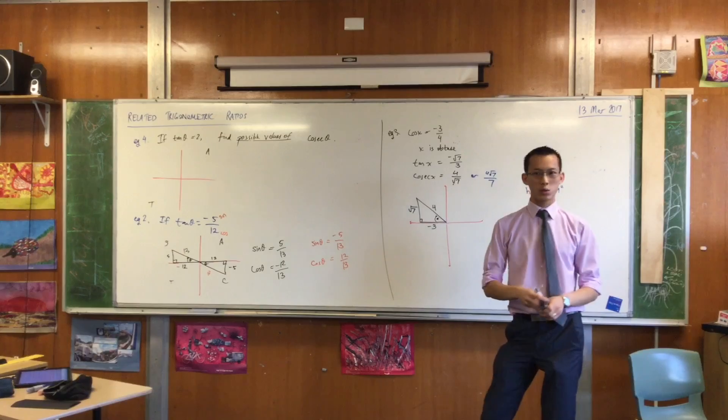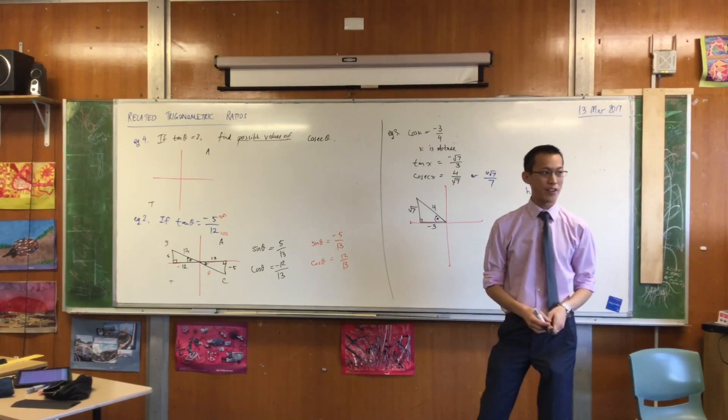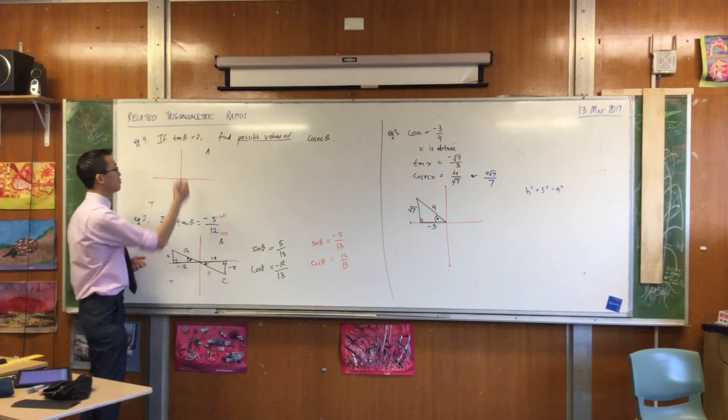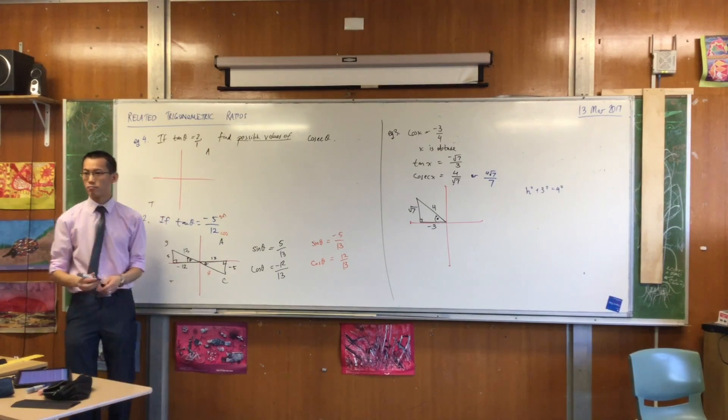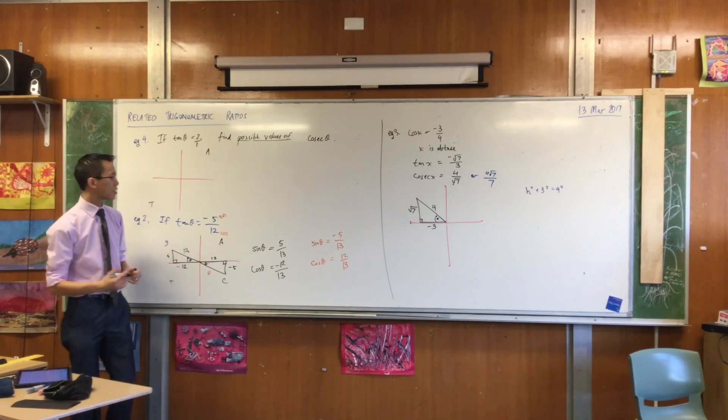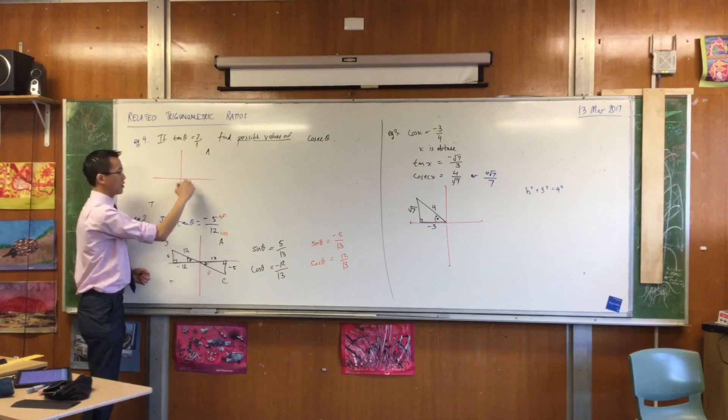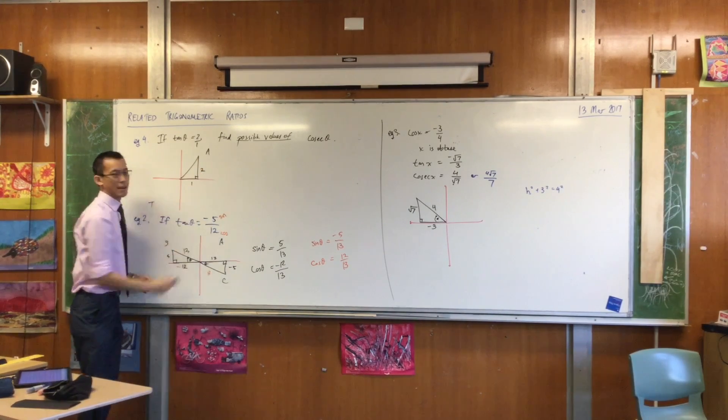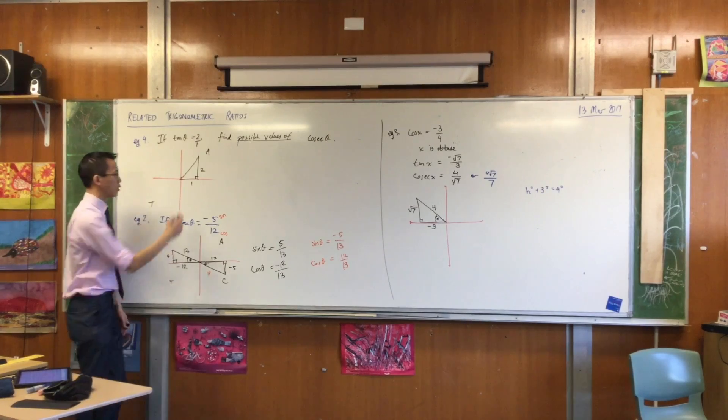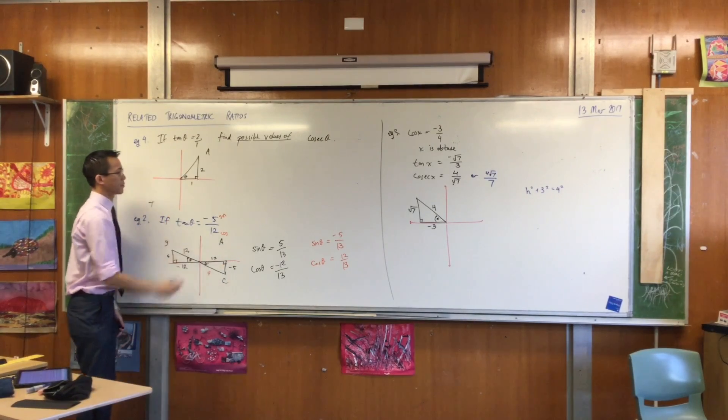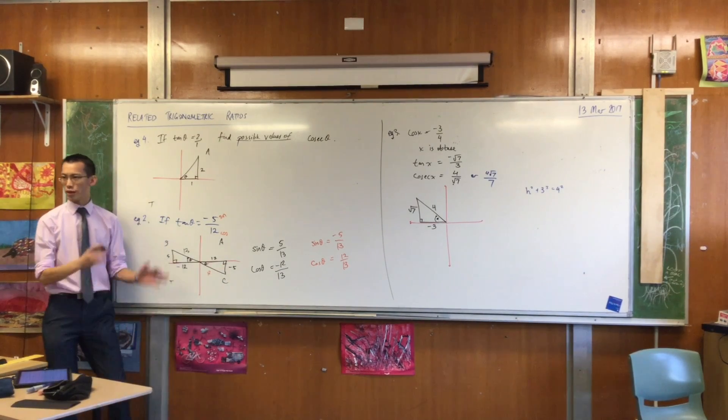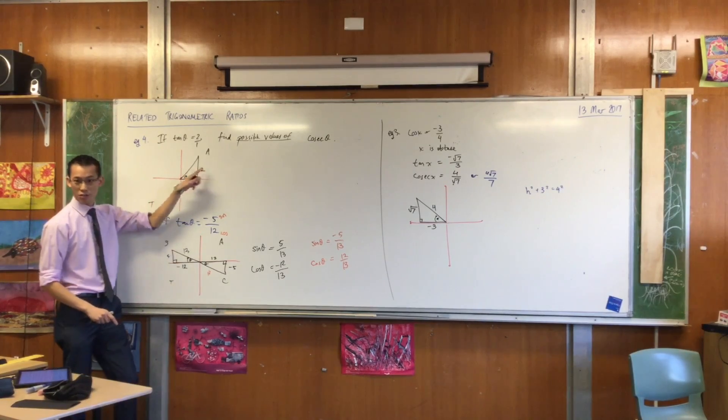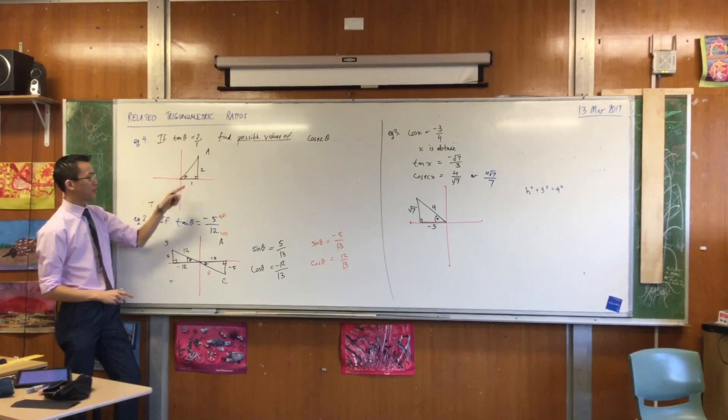Now, tan theta equals 2. 2 is a rational number. I could write it as a ratio. I'd probably write it as 2 over 1. So in my first quadrant here, opposite on adjacent had better be 2 over 1. So I'll make it about twice as long, just so my diagram looks reasonable. Does that look okay so far? You can see why I'm in the first quadrant. You can see why I've positioned my 2 and my 1 where they are. Opposite on adjacent gives me what I need.